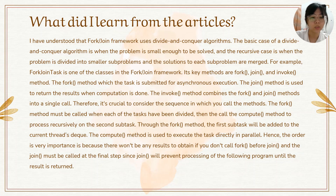Therefore, it is important to consider the sequence in which you call the methods. The fork() method must be called when each of the tasks has been divided. Then call the compute() method to process recursively on the second sub-task. Through the fork() method, the first sub-task will be added to the current thread's queue. The compute() method is used to execute the tasks directly in parallel. Hence, the order is very important because there won't be any result to obtain if you don't call fork() before join(). And join() must be called at the final step, since it will prevent processing of the following program until the result is returned.